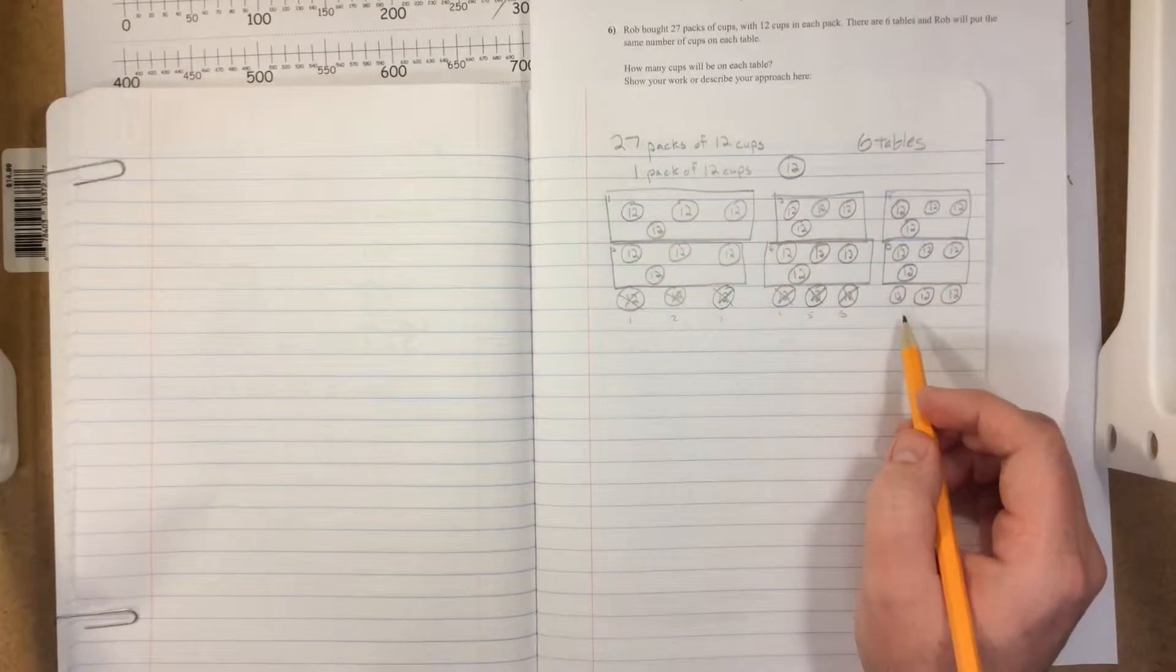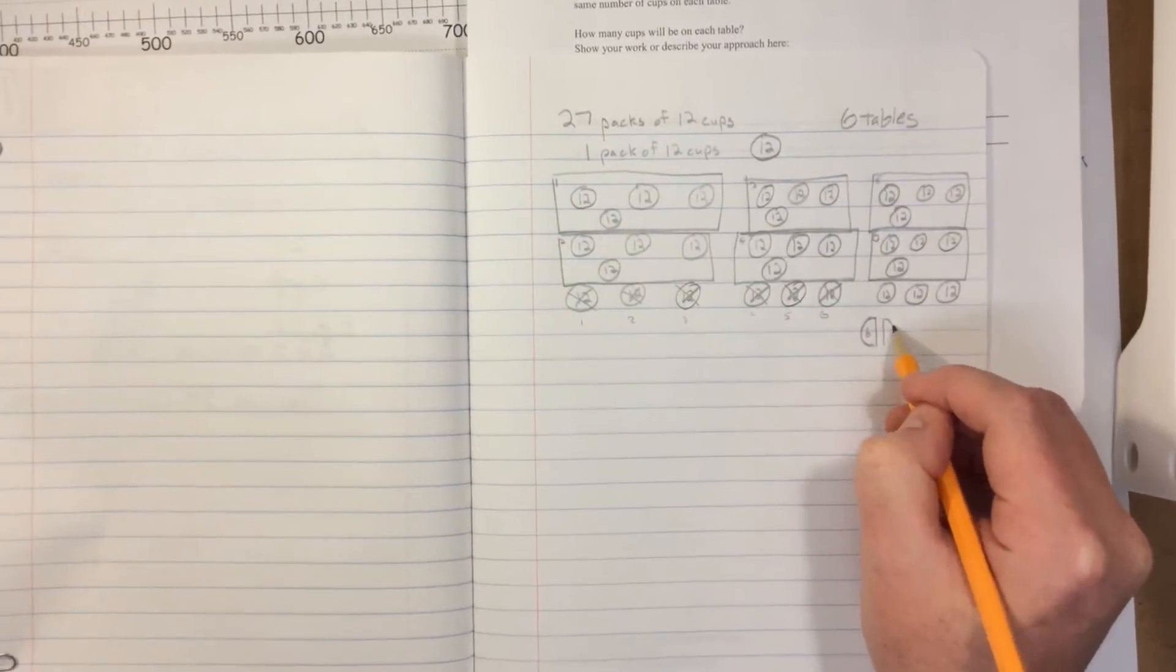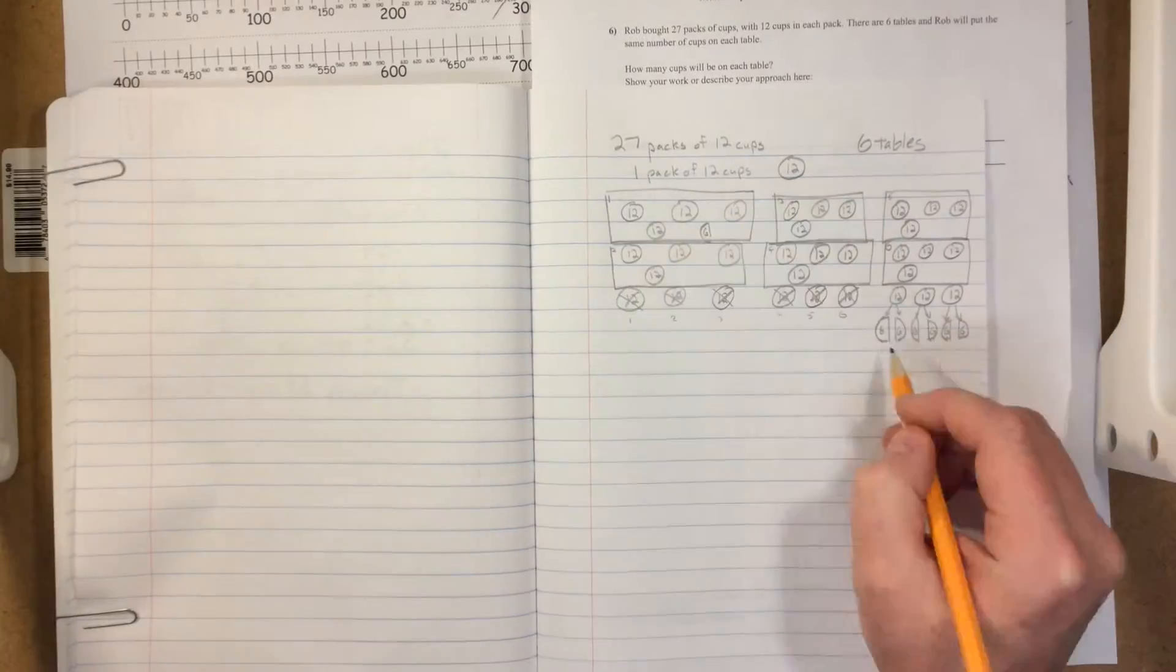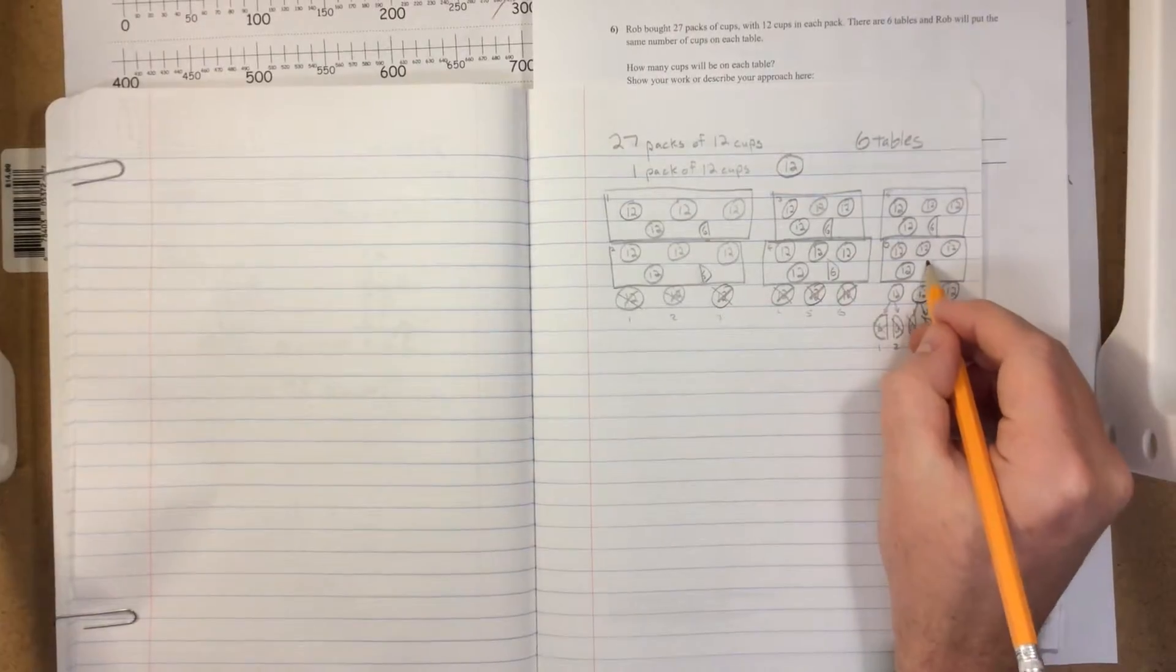Now we have three packs left over. Let's divide them in half. So each pack is 12, so each half pack has six. So we have one half pack, two half pack, three half pack, four half pack, five half pack, six half pack.